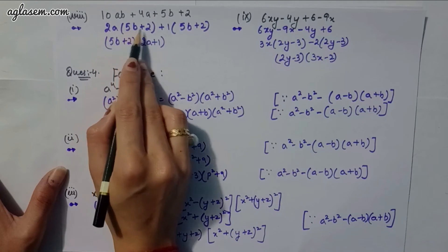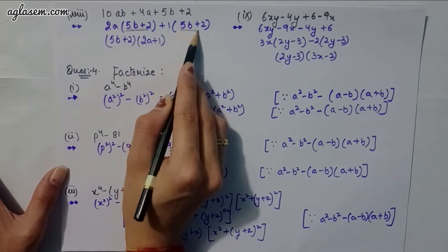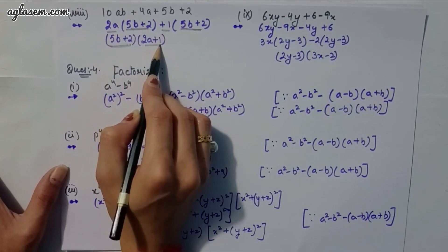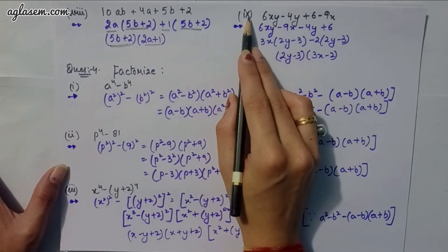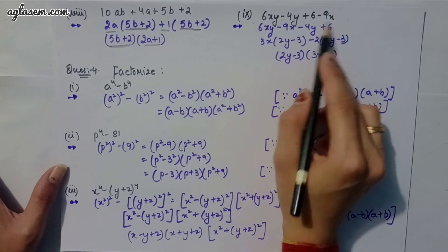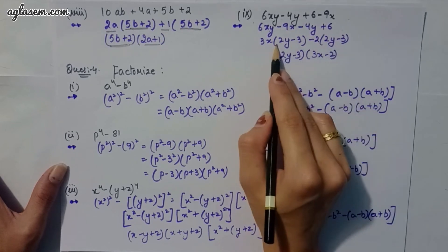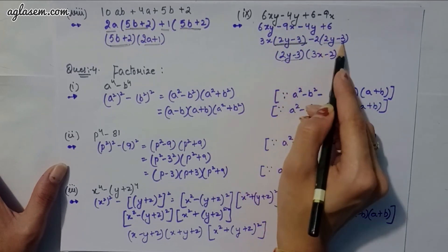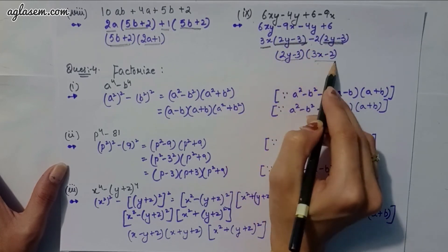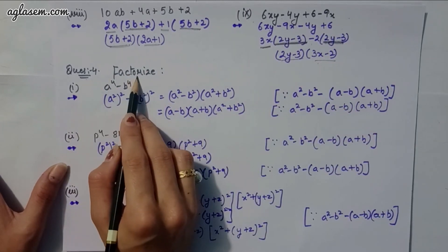Eighth part: 10ab + 4a + 5b + 2. Take 2a common from first two: 2a(5b + 2) + 1(5b + 2) = (5b + 2)(2a + 1). Last part: 6xy − 4y + 6 − 9x. Rearrange: 6xy − 9x − 4y + 6 = 3x(2y − 3) − 2(2y − 3) = (2y − 3)(3x − 2).